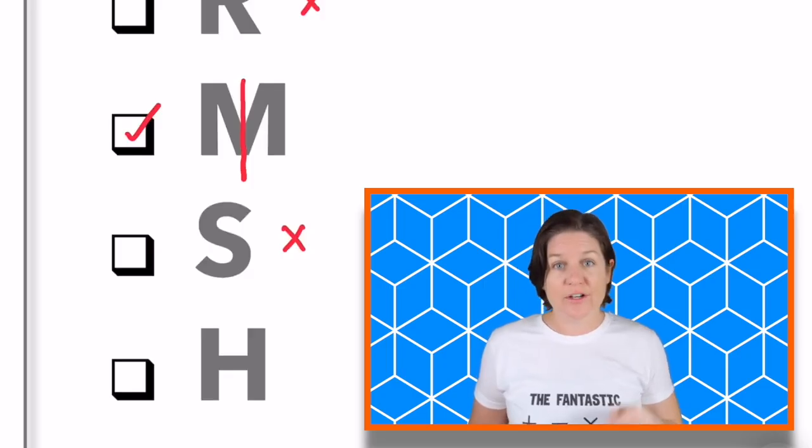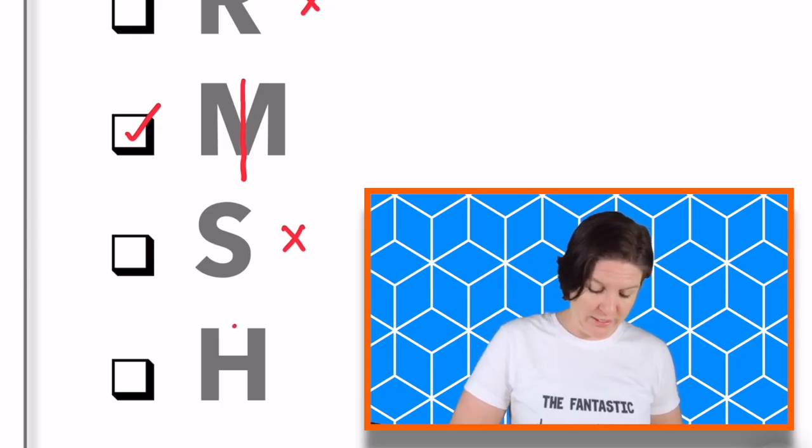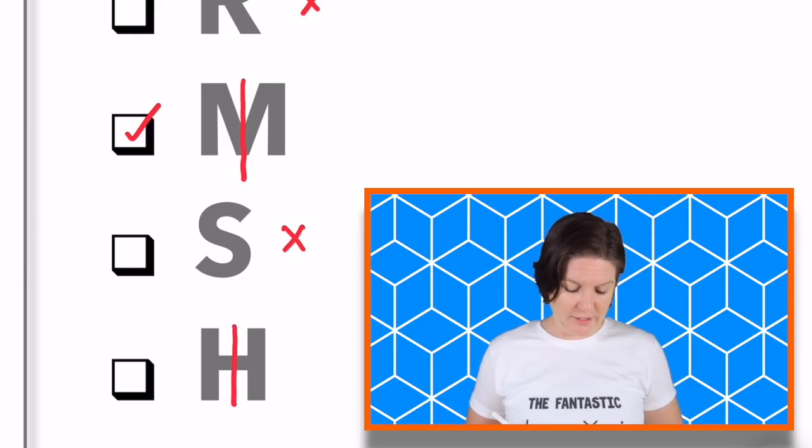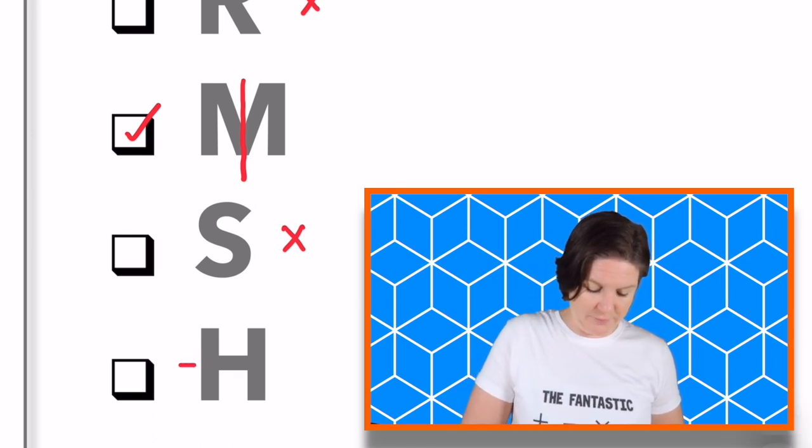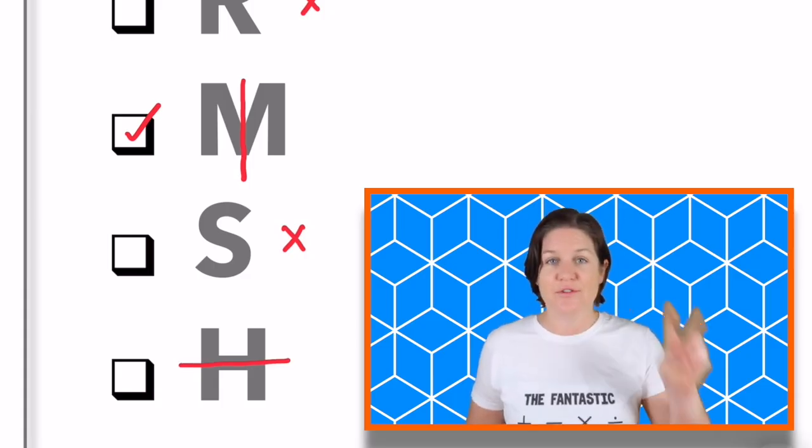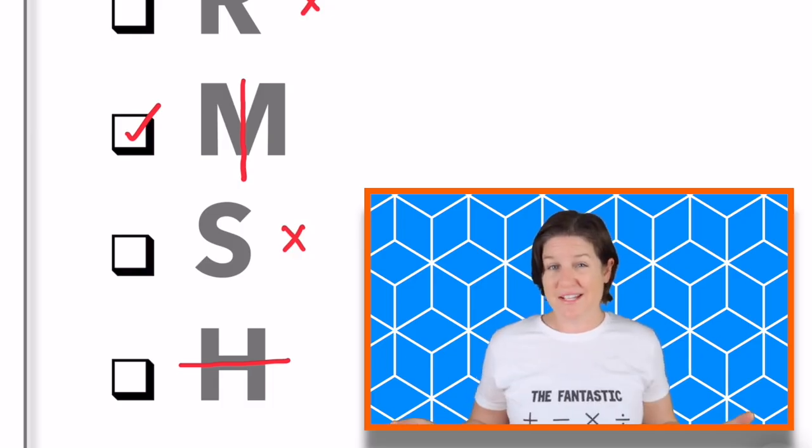Now, how about this letter H? How many lines of symmetry did you find? Okay, let's see. Well, there is one right here. If you were to fold right there, that would be... And there is one going from side to side. So there's actually two lines of symmetry for this one.